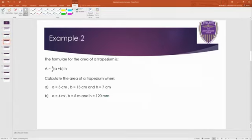Next example then. Copy this one down. Hopefully we recognize this one. I haven't given you a diagram of a trapezium. We have done this before. So hopefully we recognize this formula. The formula for the area of a trapezium is A equals a half of a plus b times h. Two different answers for us to work out. Part a says calculate the area of the trapezium when a equals 5, b equals 13, and h equals 7.